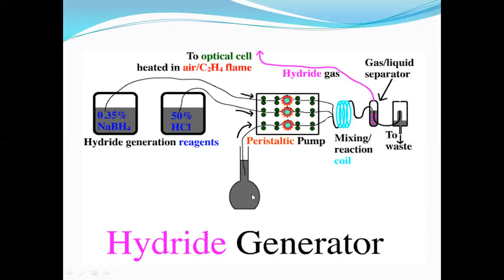The sample is at the bottom. These three solutions — the sample, sodium borohydride, and 50% HCl — are mixed using peristaltic pumps and then accelerated into a mixing or reaction coil. From the reaction coil, hydrides of the different metals are generated. A gas-liquid separator then separates the hydride gas, while waste is drained out. The hydride gas is then directed to the optical cell and heated in an air-acetylene flame.